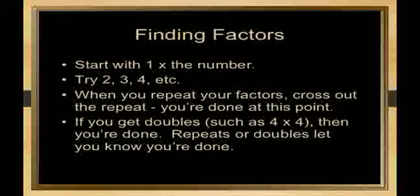When you repeat your factors, cross out the repeat—you're done at this point. If you get doubles such as 4 times 4, then you are done. Repeats or doublets let you know you are done.